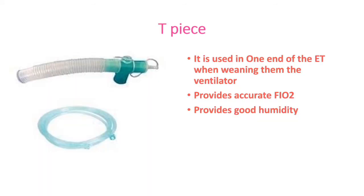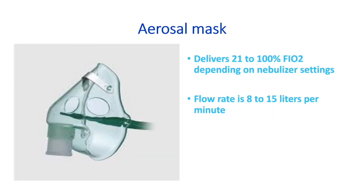The T-piece is used at one end of the endotracheal tube when weaning the patient from the ventilator; it provides accurate FiO2 and good humidity. The aerosol mask delivers 21–100% FiO2 depending on the nebulizer setting, with a flow rate of 8–15 liters per minute.